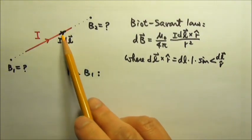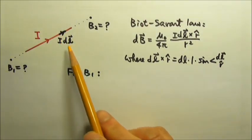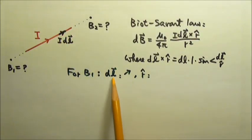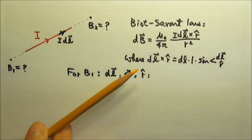Let's look at this point current source, idl. dl is in the same direction as the current, so dl goes that way.